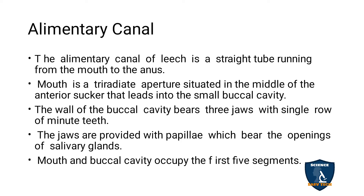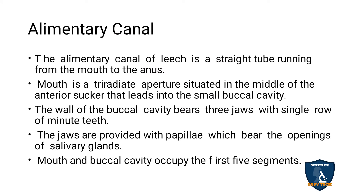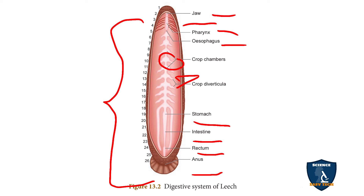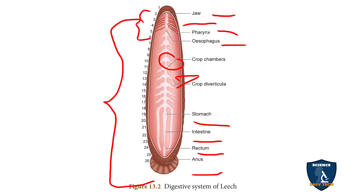After the mouth there is a small buccal cavity. The wall of the buccal cavity has jaws with a single row of teeth present inside. The papilla-like structures seen in the jaws are the salivary glands. The mouth and buccal cavity are located within the first to fifth segments. The jaws have a single row of teeth, and the papilla-like structures are called the salivary glands.